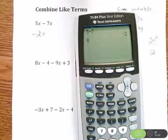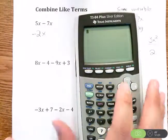And what do I get? I get negative 2. Now the thing you don't want to forget is that x is still attached. So our next problem, 8x minus 4 minus 9x plus 3.